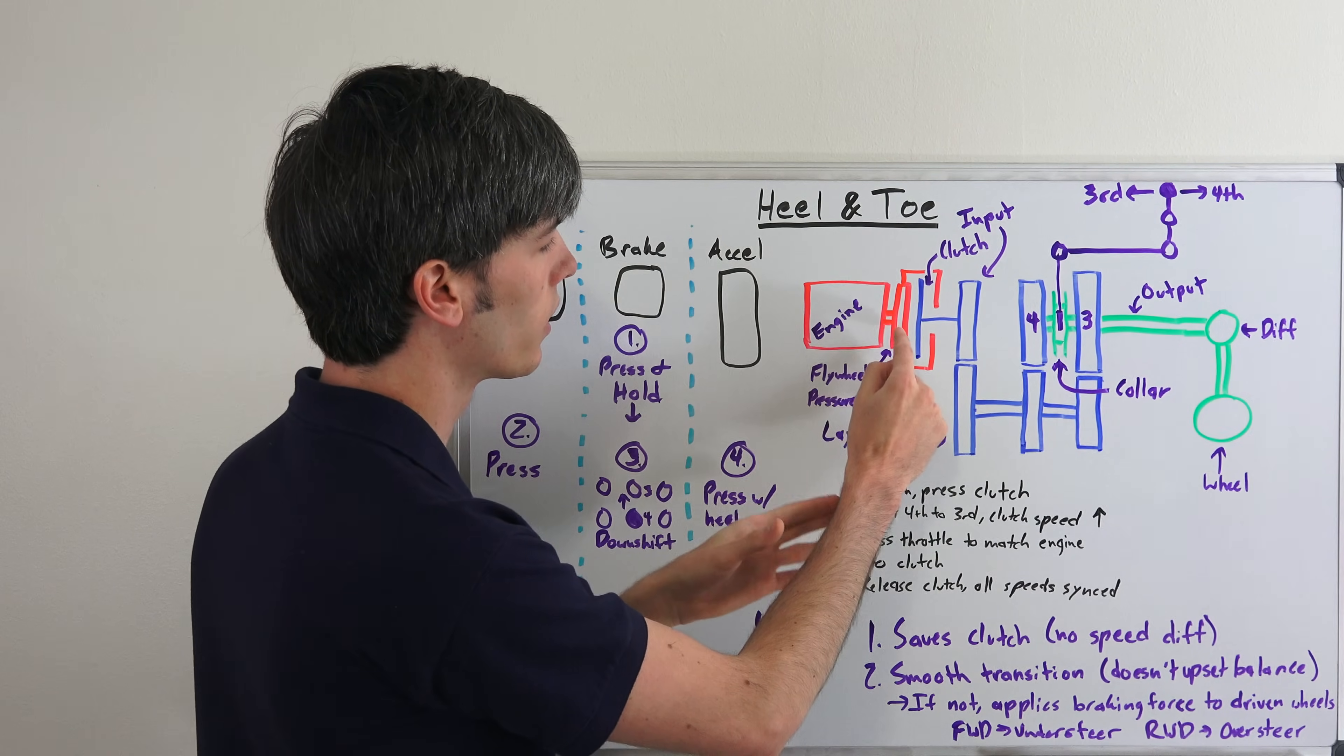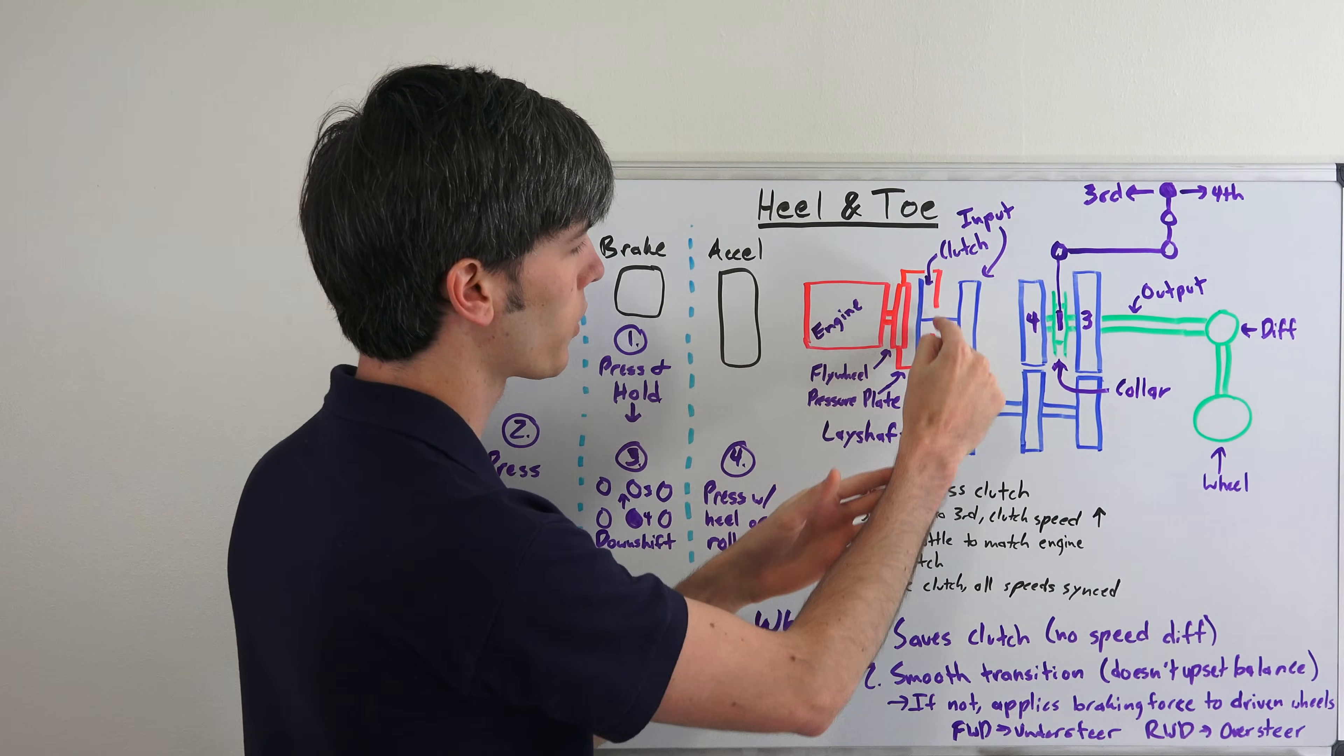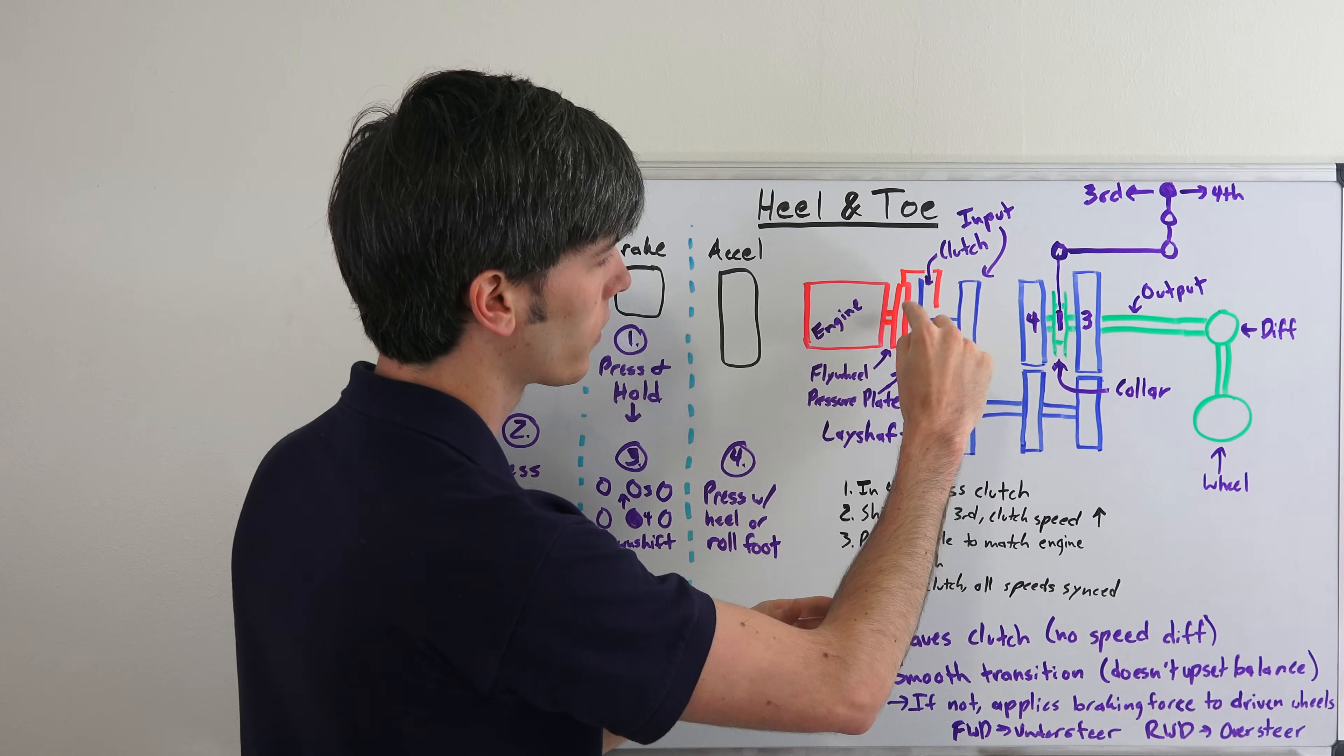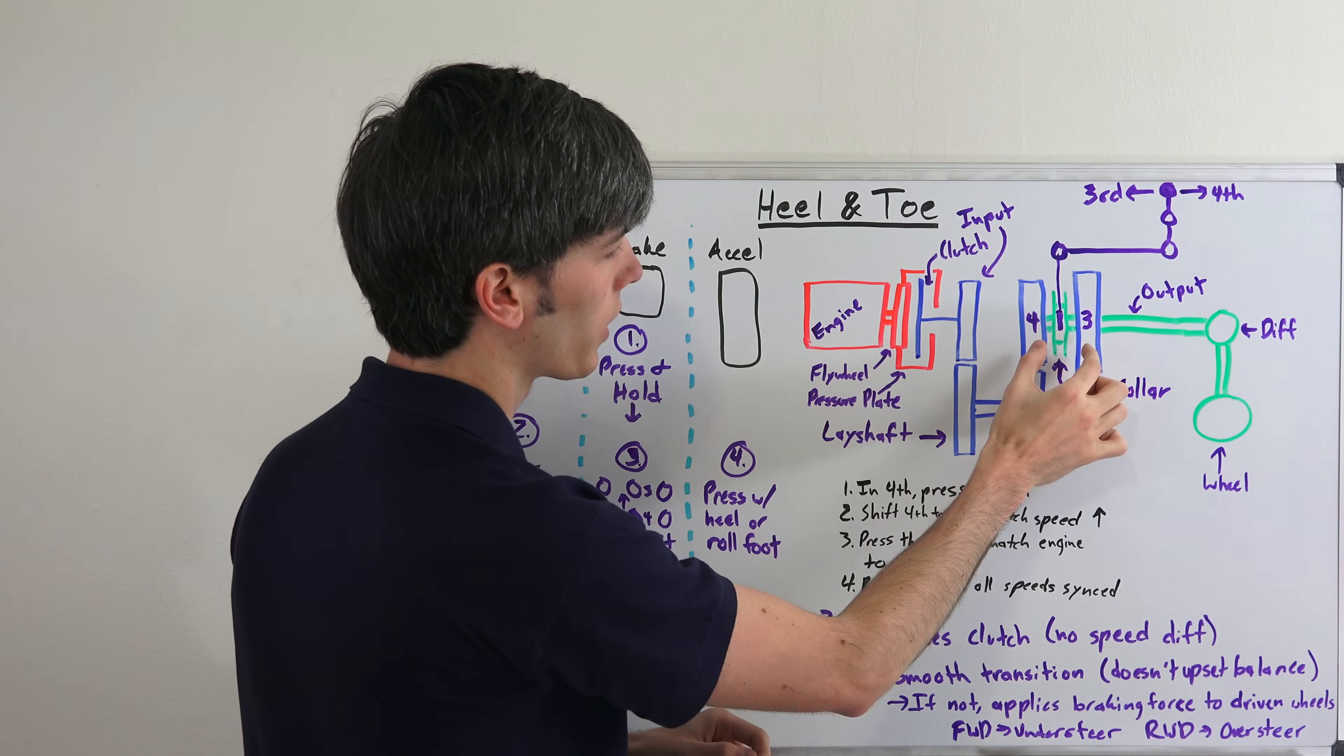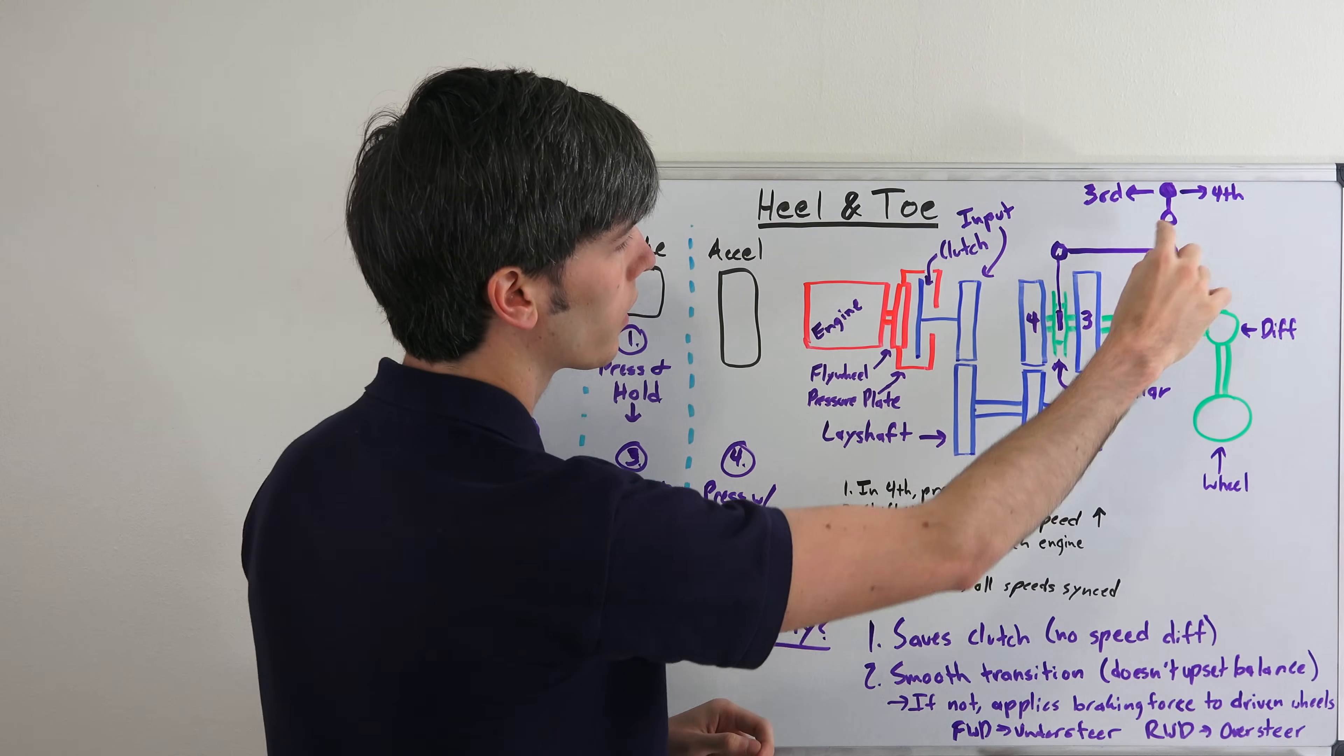So here we have our engine connected up with the flywheel and the pressure plate surrounding the clutch. That's giving us our input shaft there which is going over to the lay shaft. We've got our gears three and four and here's our output shaft with the collar.